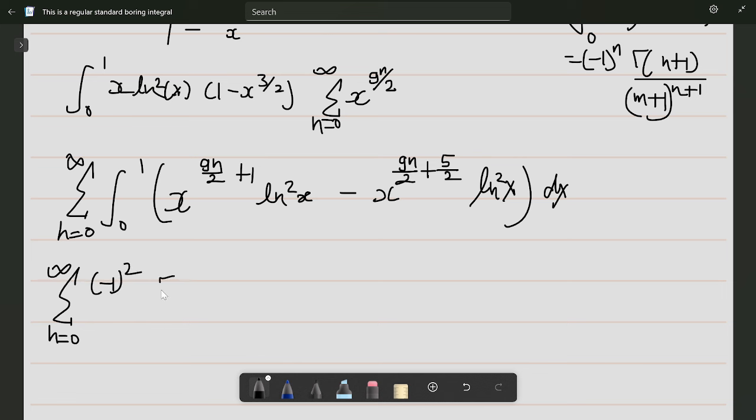Γ(3)/(9n/2 + 2)³ minus (-1)² Γ(3)/(9n/2 + 7/2)³.